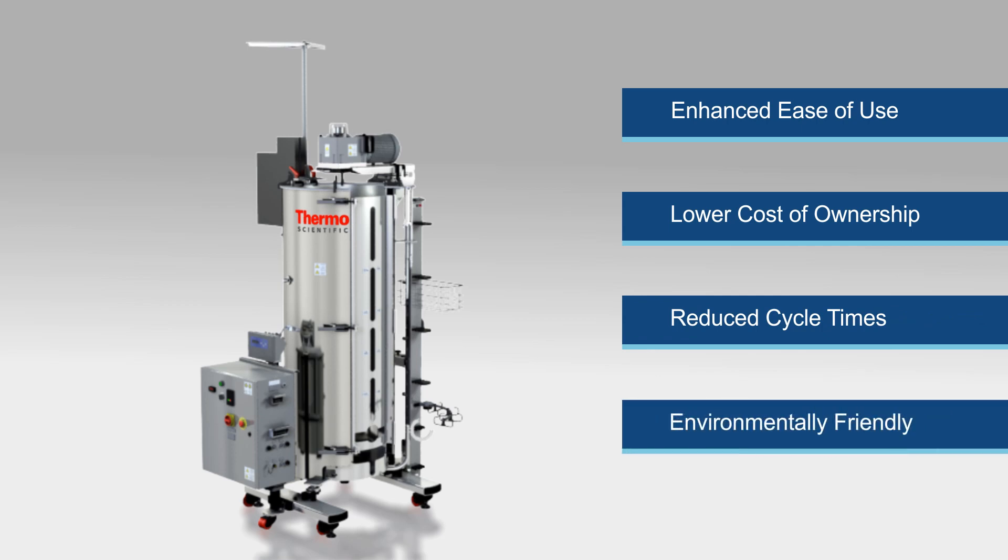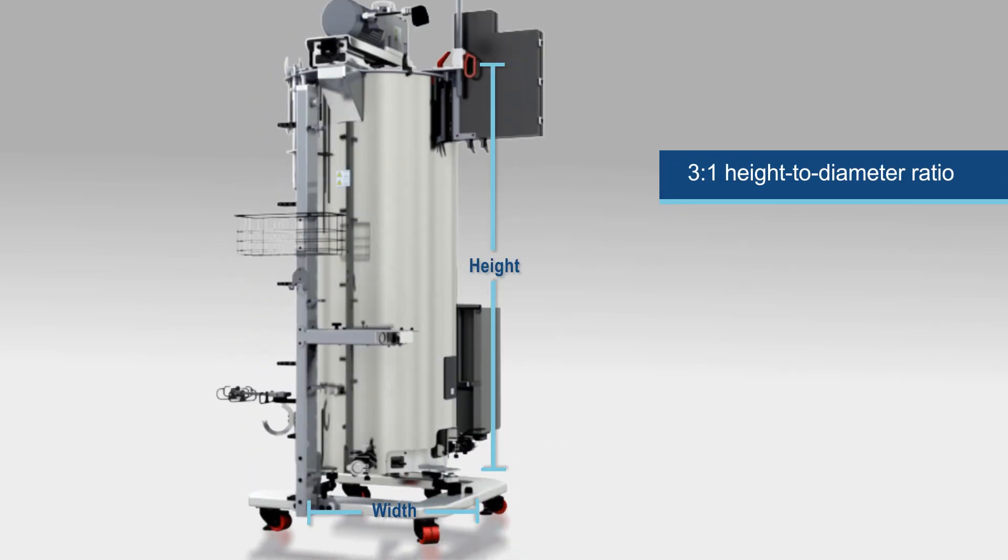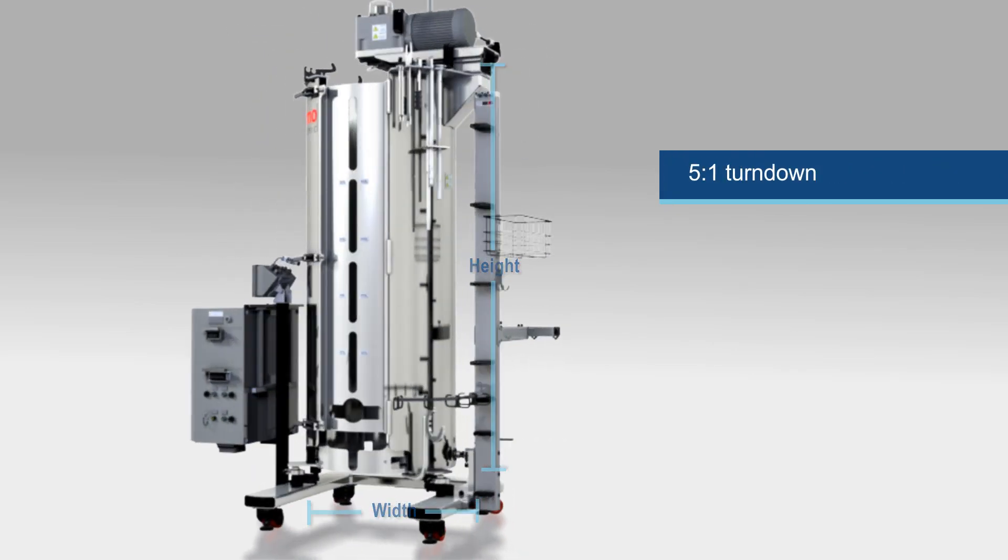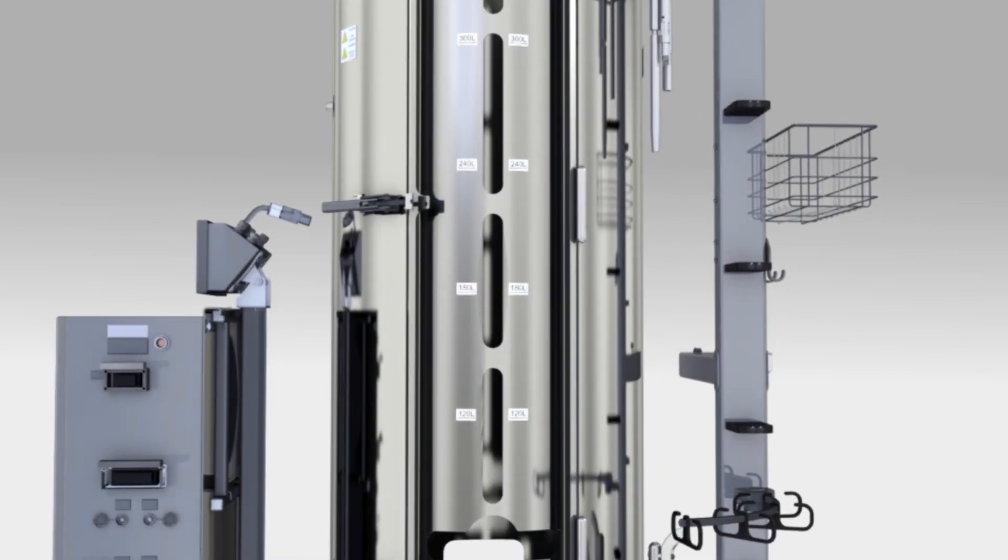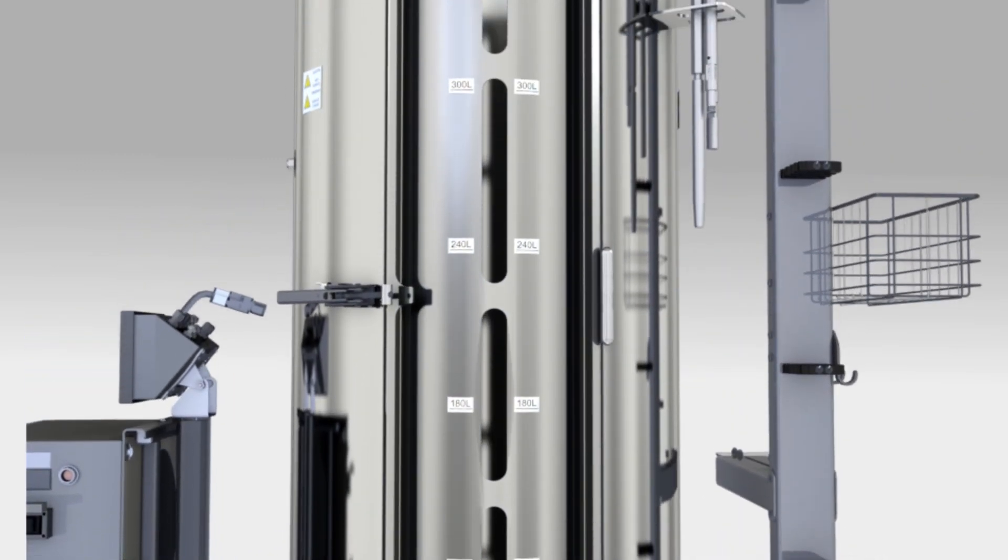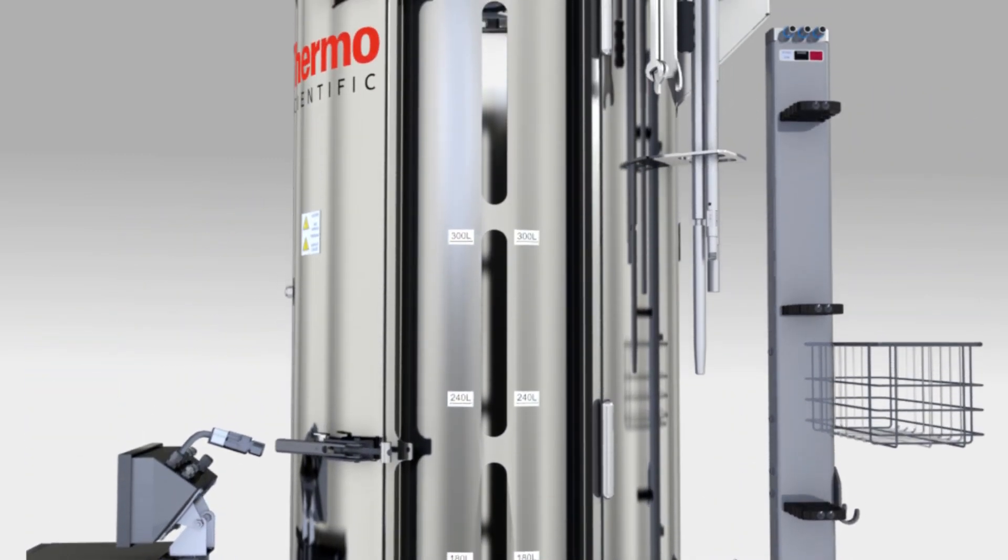Some of the key features include 3 to 1 height to diameter ratio with a 5 to 1 turndown ratio, clearly visible volume marker labels, and a vertical window into the bioprocess container.